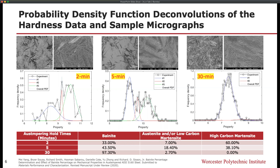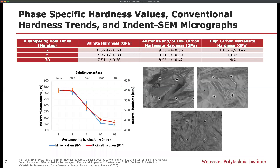To substantiate the different microstructures as a function of austempering hold times, the corresponding SEM micrographs as well as optical micrographs are shown. With respect to the hardnesses identified, we can also substantiate the macroscale material properties measured using microhardness and Rockwell hardness testing, to show that as the martensite and austenite decrease and the bainite increases, the overall hardness would be expected to decrease as well.